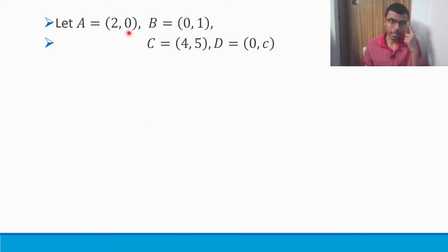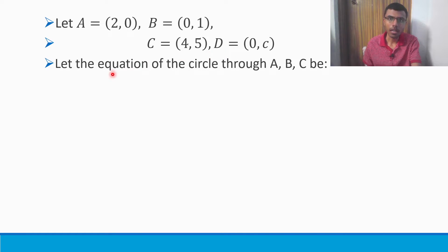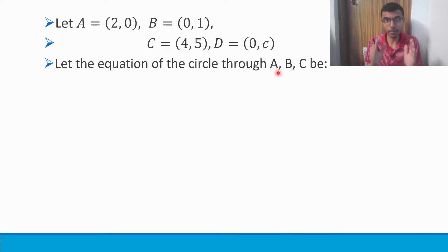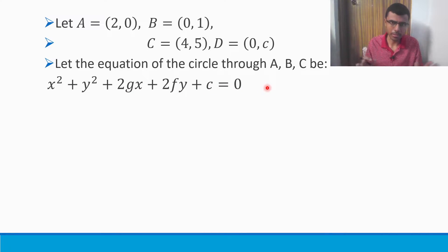I'm taking the first point as A, second point as B, third point as C, and fourth point as D. The equation through the points A, B, C — I'm going to find the equation of the circle passing through points A, B, and C. I'm taking it as X² + Y² + 2GX + 2FY + C = 0, the standard form of a circle.